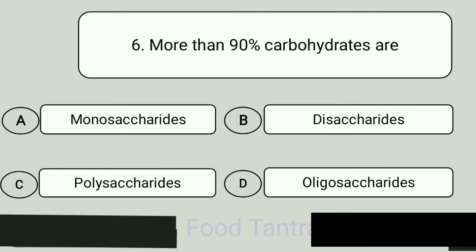Question 6. More than 90% of carbohydrates are. A: Monosaccharides. B: Disaccharides. C: Polysaccharides. D: Oligosaccharides. Answer is Polysaccharides.